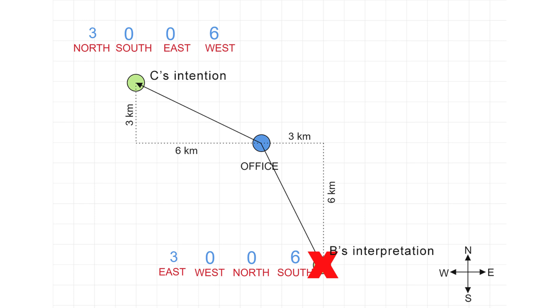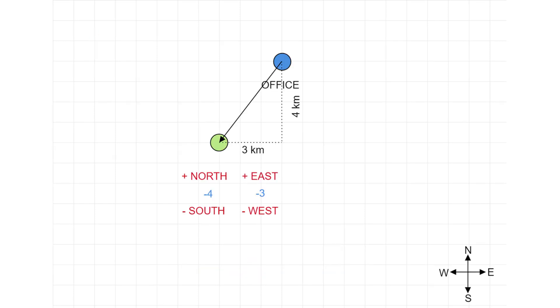There could be even different ways to encode these directions. One of them is just using two numbers. The first number if positive means north and negative means south and the second number if positive means east and negative means west.